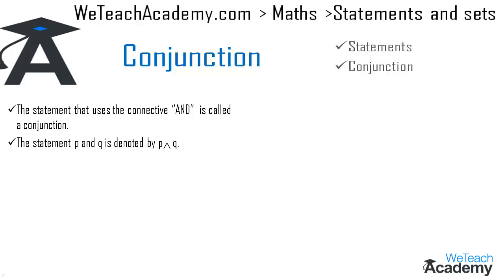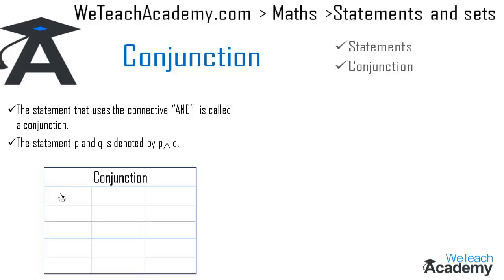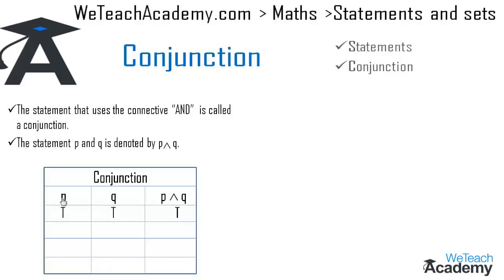We can also define conjunction with the help of a truth table. Here we have three columns: the first two columns give the truth values for p and q, and the last column gives the truth value for p ∧ q. If both statements p and q are true, then the truth value for p ∧ q is also true.